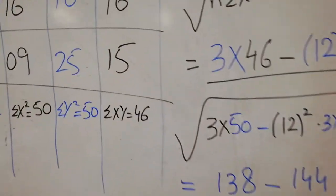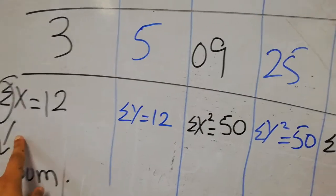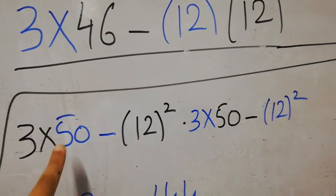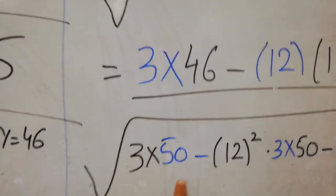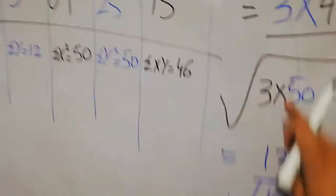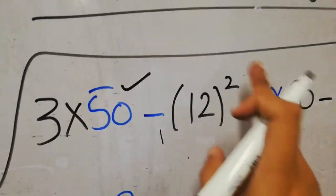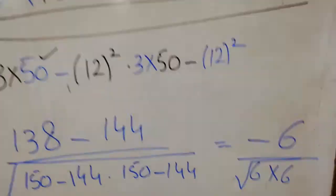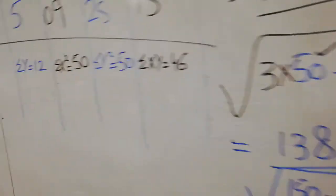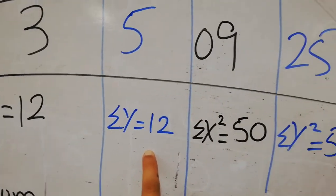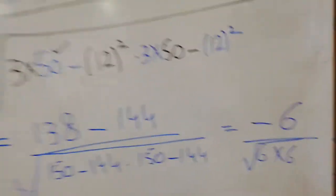Putting values into the formula: numerator is n×ΣXY minus ΣX×ΣY, which is 3×46 minus 12×12. The denominator is the square root of (n×ΣX² minus (ΣX)²) times (n×ΣY² minus (ΣY)²), which is the square root of (3×50 minus 12²) times (3×50 minus 12²). Note: ΣX² is the sum of squares, while (ΣX)² is the whole square of the sum — do not confuse these two.